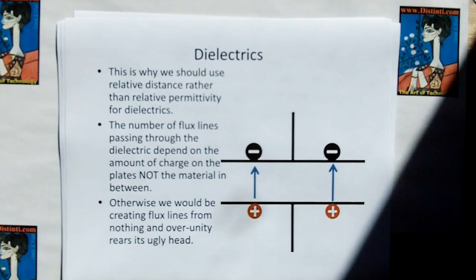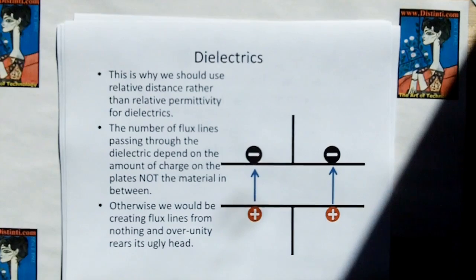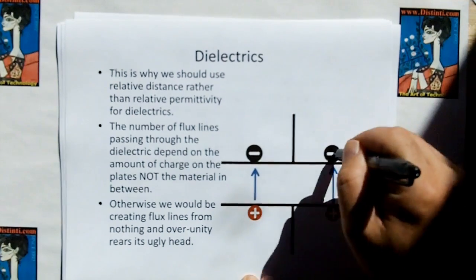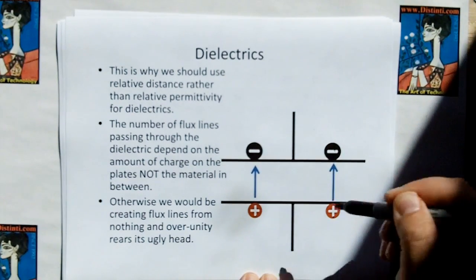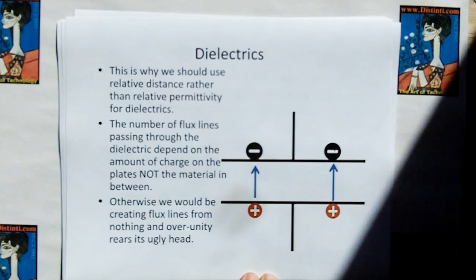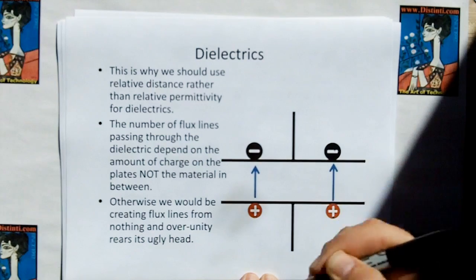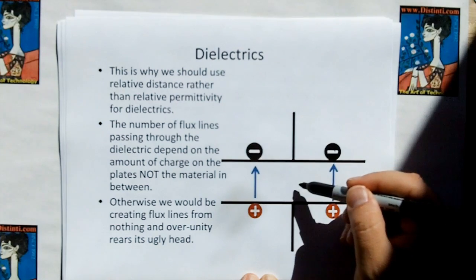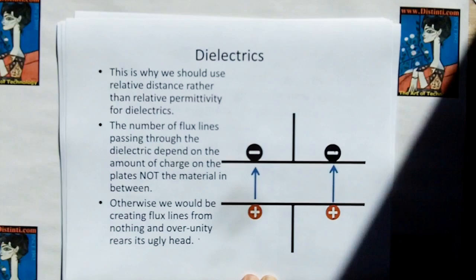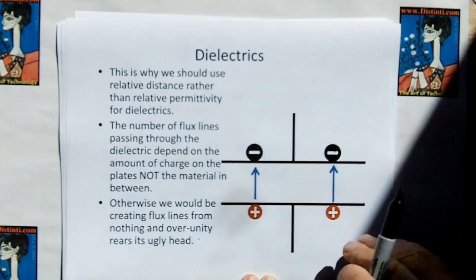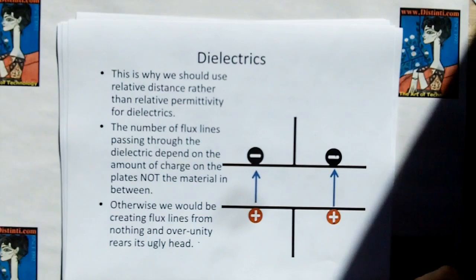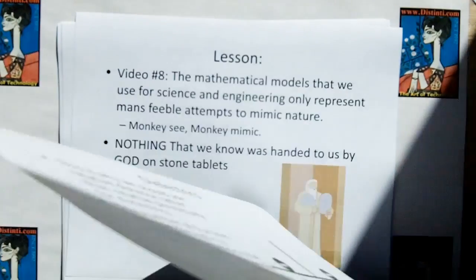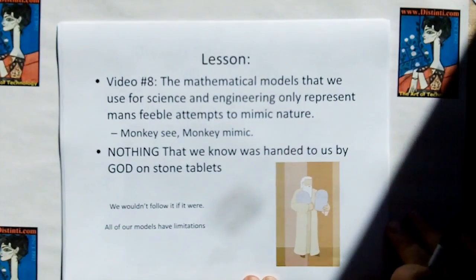This is why we should use relative distance rather than relative permittivity for dielectrics. The number of flux lines passing through any given dielectric depends on the charges on the plates, not the dielectric. The dielectric does not enhance the Coulomb field that goes through it — all it does is make the Coulomb field pass more easily, as if you were shorting the plates. If the dielectric magnified the number of flux lines, you'd get an over-unity problem. You can't have flux lines without charge. Reducing the distance between plates is a better model for dielectrics than the relative permittivity model developed hundreds of years ago.